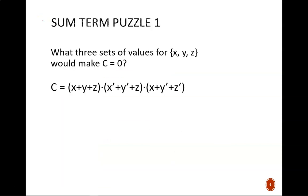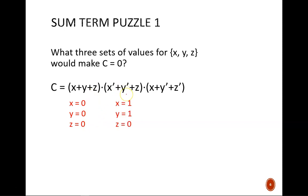Let's look at the other side of the coin: sum terms instead of product terms. Because of the flip logic between AND and OR, the patterns we noticed before will all be opposites now. What are the three special sets of values that would make C equals 0? Because all of these sum terms are being ANDed together, if any one of them is 0, the whole expression becomes 0. To make the first sum term 0, then x, y, and z all must be 0. To make the next sum term 0, we must have x equals 1, y equals 1, and z equals 0 — x must equal 1 because its value gets complemented. The same logic gives us the final set.